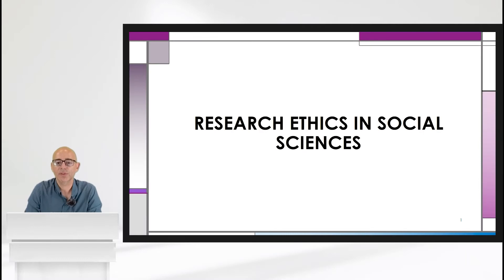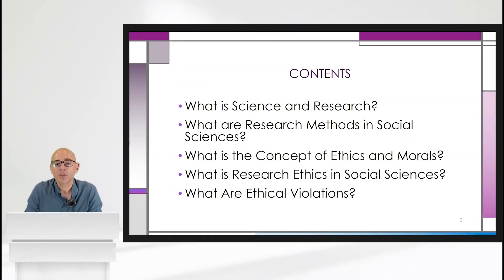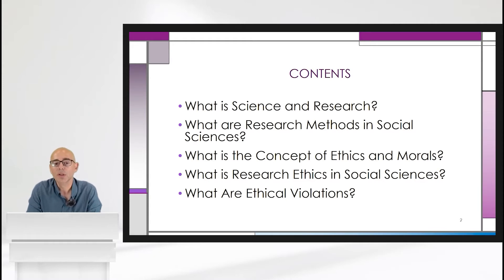Hello everyone, this is the Research Ethics in Social Sciences class. Starting with the contents, you can see there will be five main chapters in this course: what is science and research, what are research methods in social sciences, what is the concept of ethics and morals, what is research ethics in social sciences, and what are ethical violations.